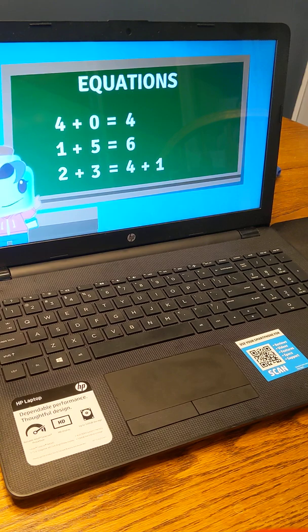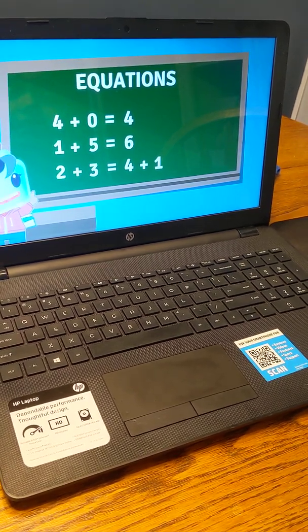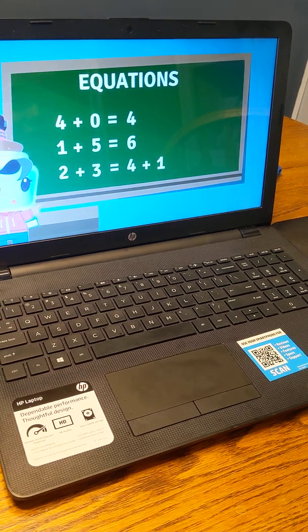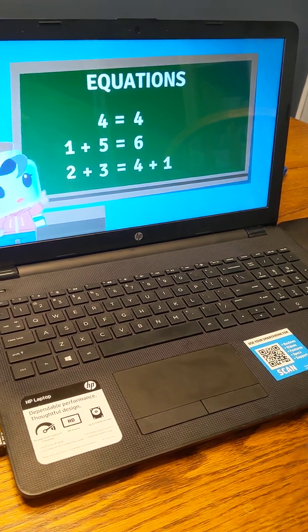Let's go through each example and see how it works. 4 plus 0 equals 4 is an equation because the value on the left side is the same as the right side.